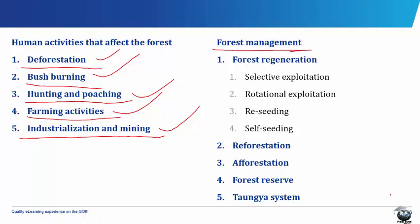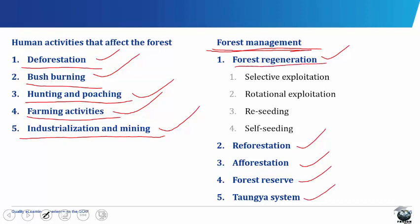Forest management involves forest regeneration, reforestation, afforestation, forest reserve and the Tonga system. Forest regeneration involves the rejuvenating of a forest — young trees need to be continually developed to replace the old mature ones as they are cut down. This process is known as regenerating, achieved by both natural and man-made processes like selective exploitation, rotational exploitation, reseeding and self-seeding.